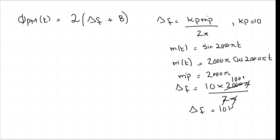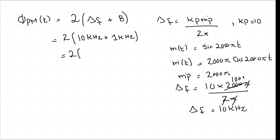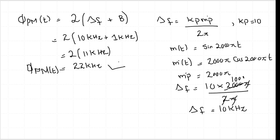With Δf = 10 kHz and B = 1 kHz, we apply Carson's rule: BW_PM = 2(10 kHz + 1 kHz) = 2 × 11 kHz = 22 kHz. So the bandwidth of the PM signal is 22 kHz. We have now found all the unknowns: FM bandwidth is 202 kHz and PM bandwidth is 22 kHz.